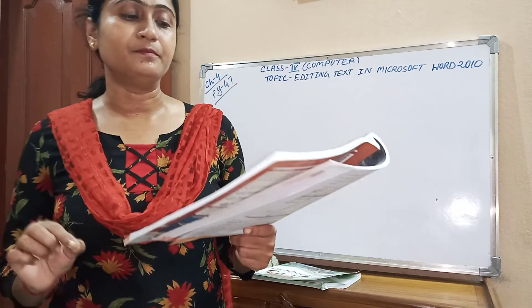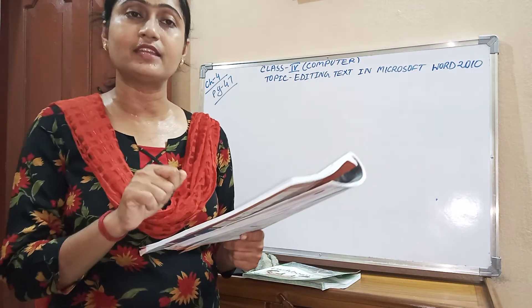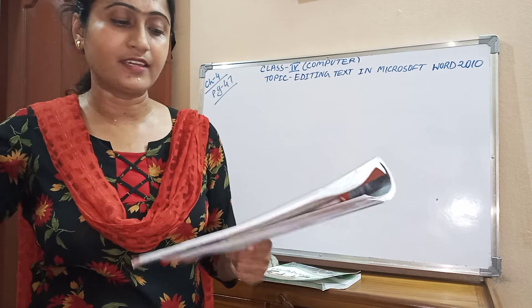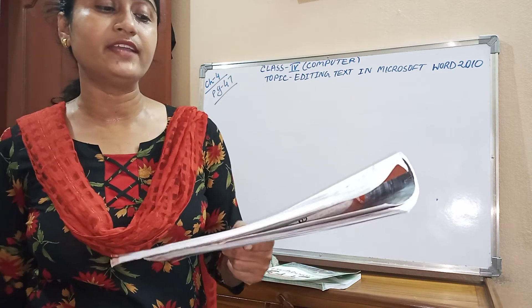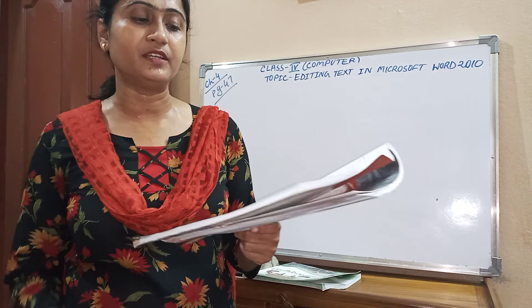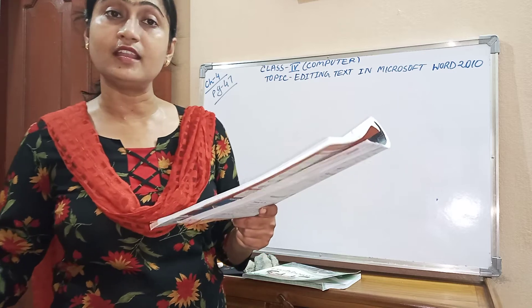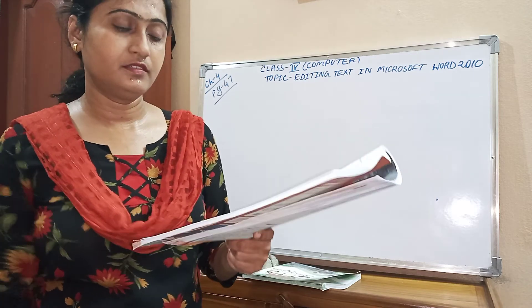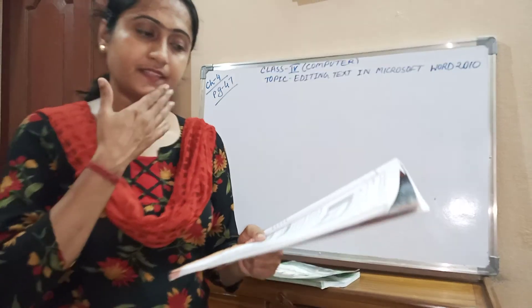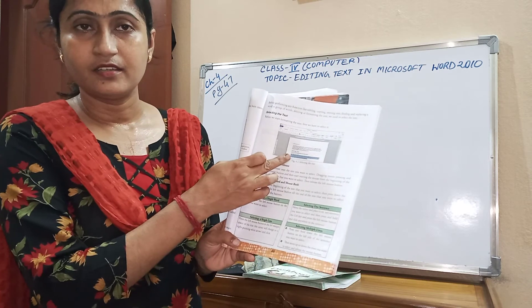Using the mouse, start dragging over the text you want to select. From where you want to select, keep your mouse pointer there and press the left mouse button. Dragging means pressing and holding the left mouse button and moving the mouse from the beginning of the text to the end of the text you want to select. Then release the left mouse button and the portion will be selected — the color of the selected text will change.